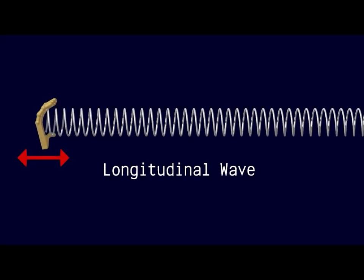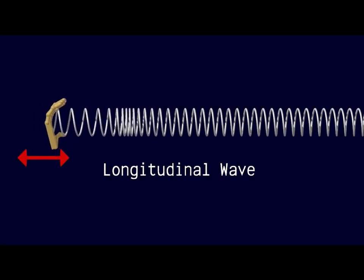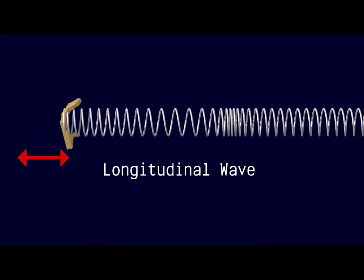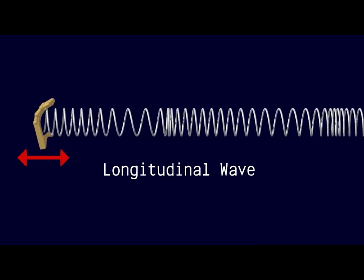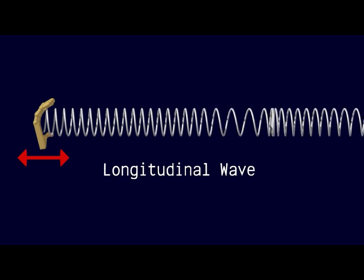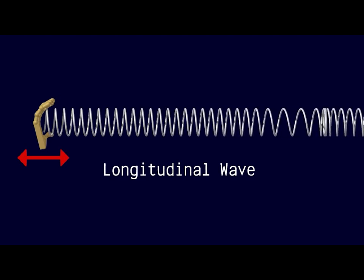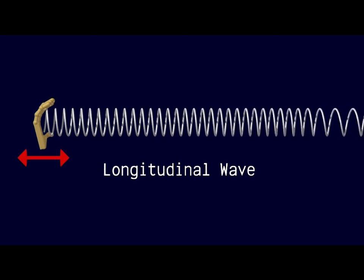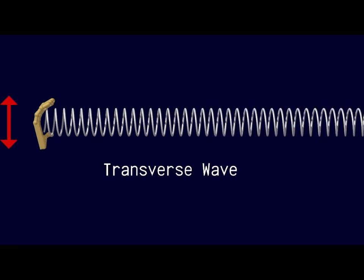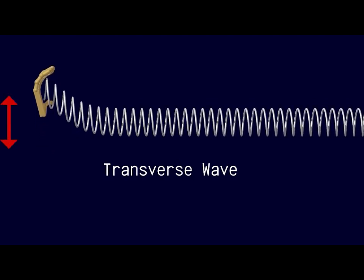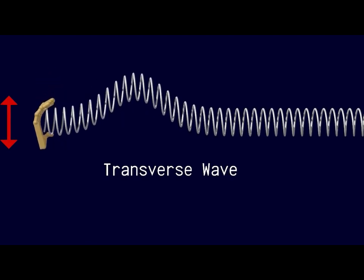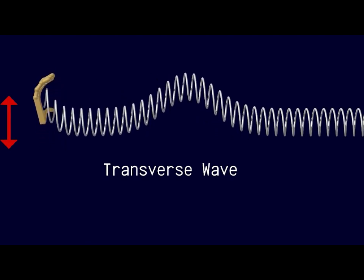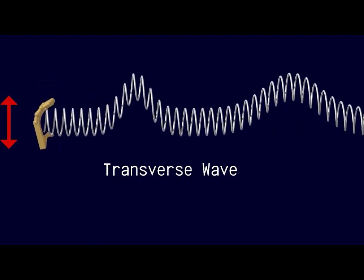In a longitudinal wave, the disturbance that makes up the wave is along the direction in which the wave travels. Longitudinal waves are also referred to as compression waves. In a transverse wave, the disturbance that makes up the wave is perpendicular to the direction in which the wave travels.